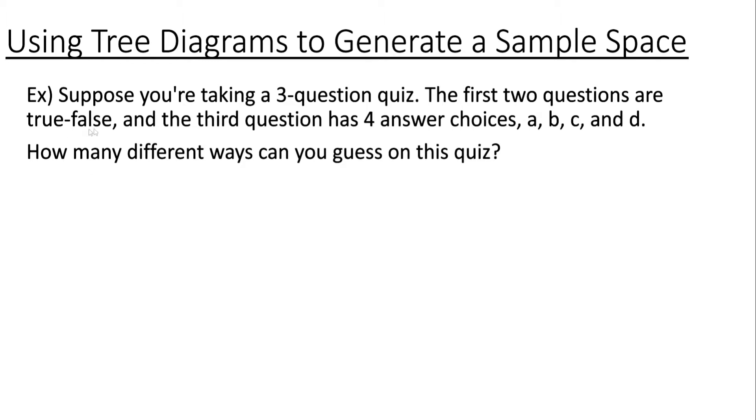Let's look at an example now. Suppose you're taking a three-question quiz. The first two questions are true-false and the third question has four answer choices A, B, C, and D. How many different ways can you guess on this quiz?